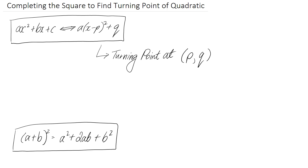In this video, I'm going to talk through how we can use a technique known as completing the square in order to find the turning point of a quadratic. The general form of a quadratic is typically presented like this: ax squared plus bx plus c, where a, b, and c are constants.